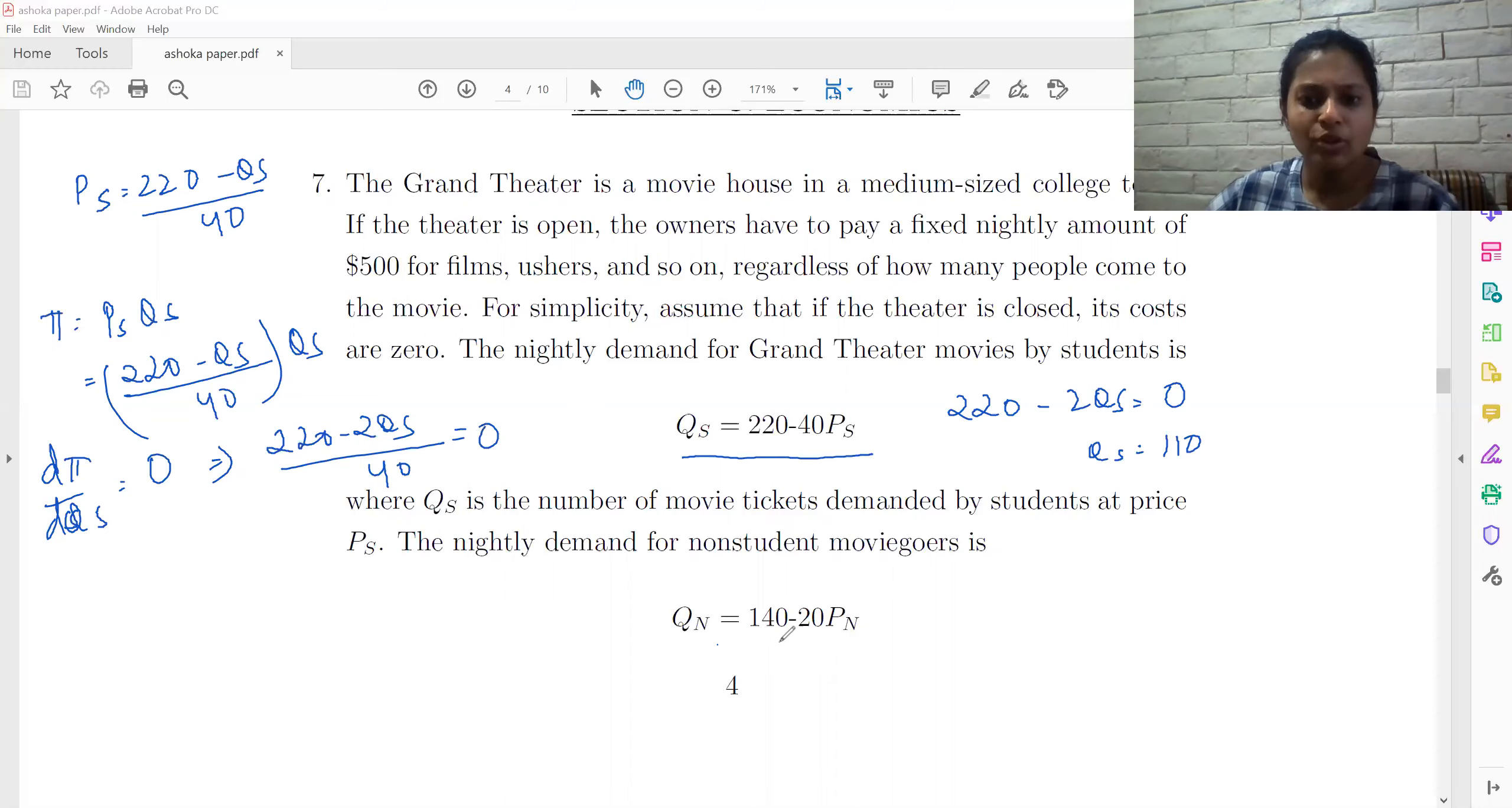Similarly, doing for QN, profit is going to be PN into QN. So PN is going to be 140 minus QN by 20 into QN, and then D pi by D QN. PN is going to be 140 minus 2 QN is equal to zero, and then QN is going to be equal to 70. So this is QN, this is QS.